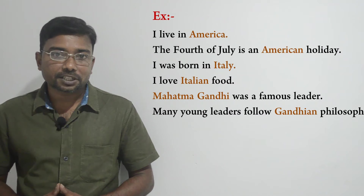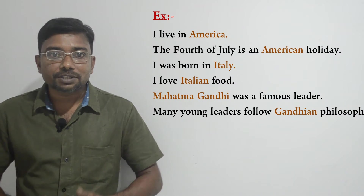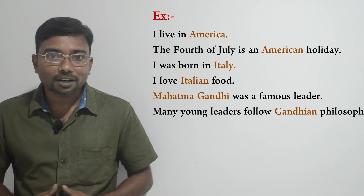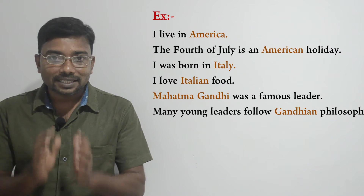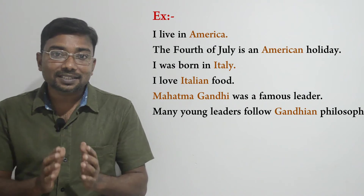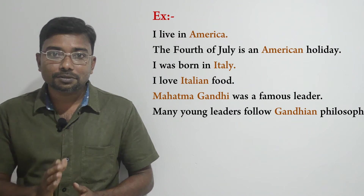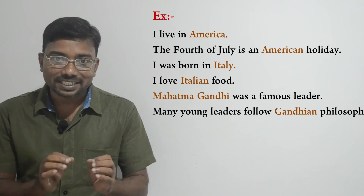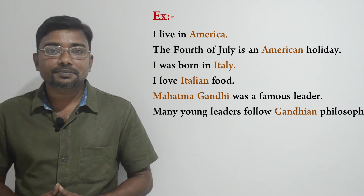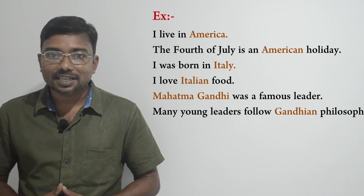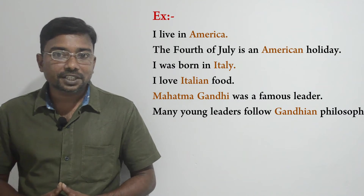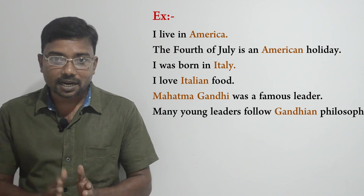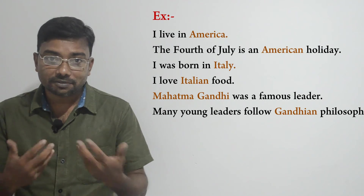In the first example, the word America acts as a proper noun because it is used to talk about a specific country. In the second example, the word American acts as a proper adjective because it stands directly before the noun 'holiday' to modify it, and it is formed from the proper noun America by using the suffix '-an'. Similarly, Italy acts as a proper noun, and Italian acts as a proper adjective because it stands directly before the noun 'food' to modify it, and it is formed from the proper noun Italy.